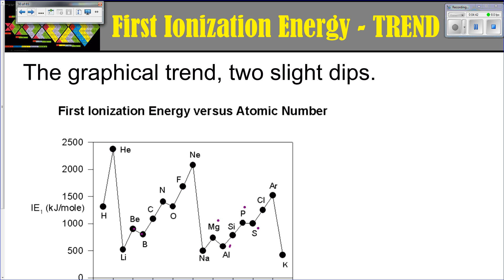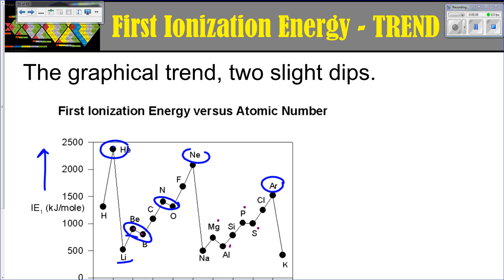If you're looking at this graphically, there are actually going to be two slight dips. This is your ionization energy over here. It increases as you go to helium, which is a noble gas — your noble gases are up here with very high ionization energies. Then it zips back down with lithium, goes up to beryllium, there's a slight dip between beryllium and boron, and then another slight dip on its way up between nitrogen and oxygen.